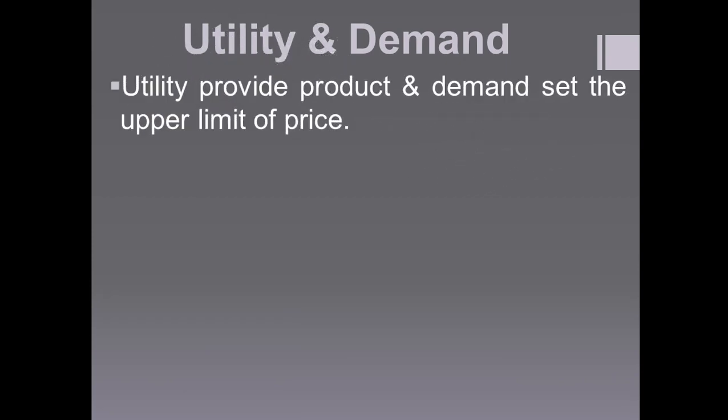Next is utility and demand. Utility means the usefulness of the product. Demand is the upper limit of the price — that is, the maximum retail price. The maximum retail price represents the upper limit, and that is called demand.